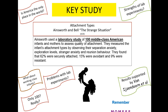Now we move on to the key study of attachment that you need to know, especially when looking at types of attachment: Mary Ainsworth's Strange Situation. She devised a scenario to create a strange situation for a child. Researchers wanted to test particular behaviours such as reunion behaviour, exploration behaviour, how much stranger anxiety the child had, and separation anxiety — how upset they were when their primary caregiver left.